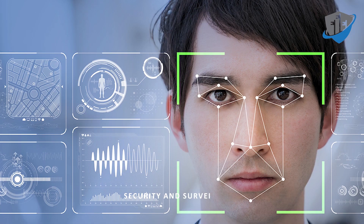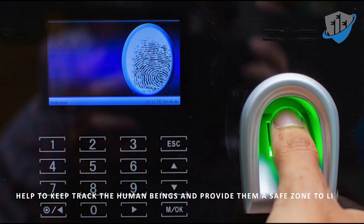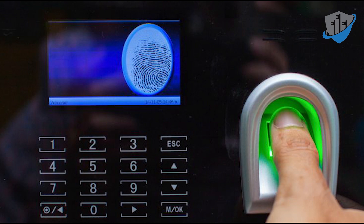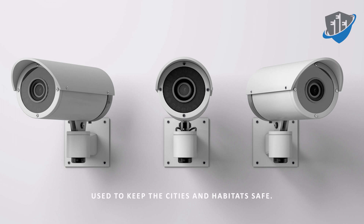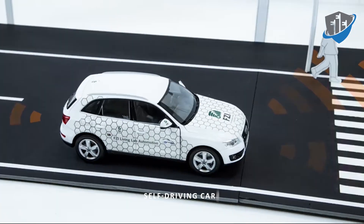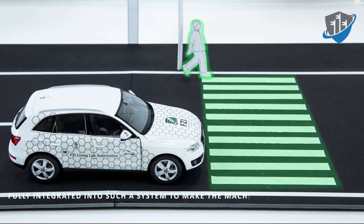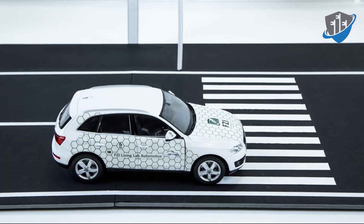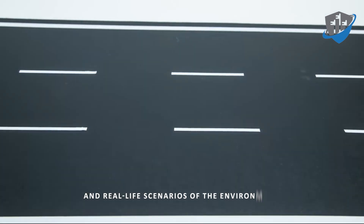Security and Surveillance: AI-based face recognition and biometric systems help track human beings and provide them a safe environment. Security cameras and surveillance equipment are widely used to keep cities and habitats safe. Self-driving cars, fully integrated with AI, make machines work automatically while understanding their surroundings and real-life environmental scenarios.